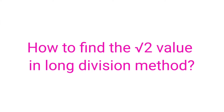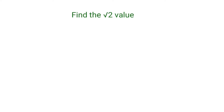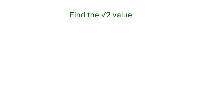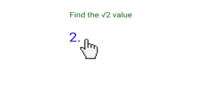How to find the square root value using the long division method. First, take the number you want to find the root of — I took the number 2. Now put a dot after this number, then put 6 zeros after the dot. Then draw 2 lines on either side of this number.